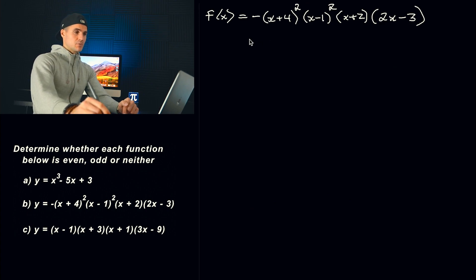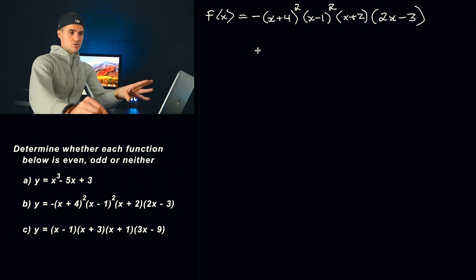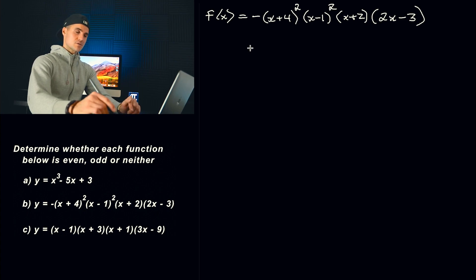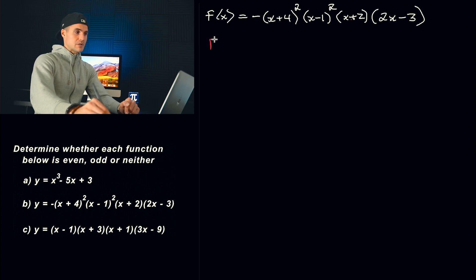Moving on to part B — this one is more intense because this polynomial is in factored form. Whenever you're dealing with polynomials in factored form and finding f of negative x and negative f of x, it's a tougher algebraic process. We could expand everything, but notice that would require expanding six brackets, which would take forever. So we have to find a simplified expression for f of negative x directly from the factored form.